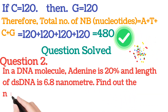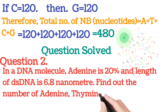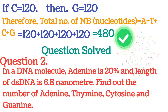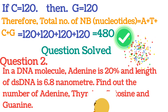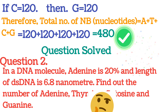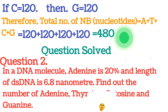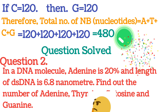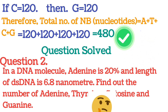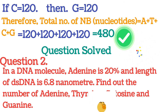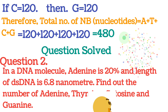Question number two: In a DNA molecule, adenine is 20 percent and the length of the double-stranded DNA is 6.8 nanometers. Find out the number of adenine, thymine, cytosine, and guanine. In this question, only adenine percentage and the length of DNA are given, and you've been asked to find out the number of all four nitrogenous bases.